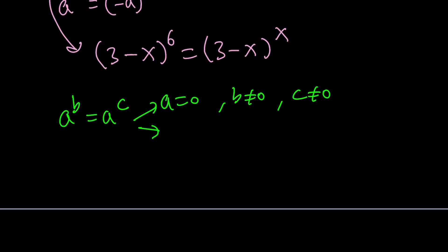The next thing we're going to look at is a can be negative 1, but in this case, b and c must be even because negative 1 raised to an even power is always positive 1, so they're equal. Or a can be 1, and we don't care about b and c because any power of 1 is going to be 1.